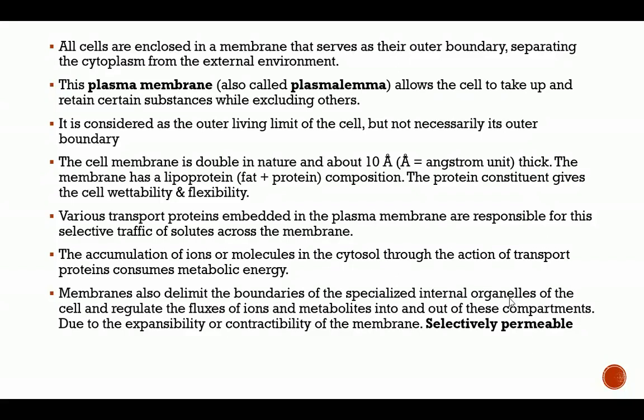The protoplasmic parts of the cell, as the name implies, are the living parts, which include the plasma membrane, the mitochondria, the chloroplasts, the nucleus, and a whole lot of organelles. The non-protoplasmic parts of the cell include the cell wall, the vacuole, and suspended granules within the cytoplasm — chemicals, ions — all those are non-living parts of the cell. So the outer living limit of the cell is the plasma membrane; however, it is not necessarily the outermost boundary, which is the cell wall.